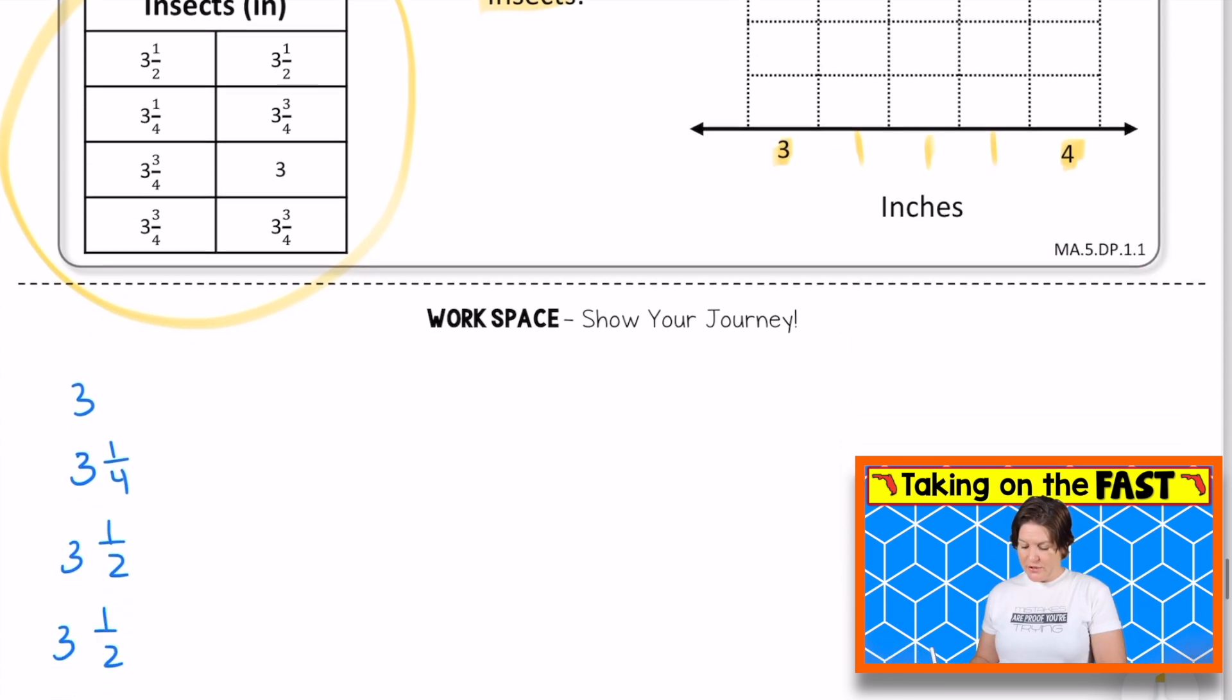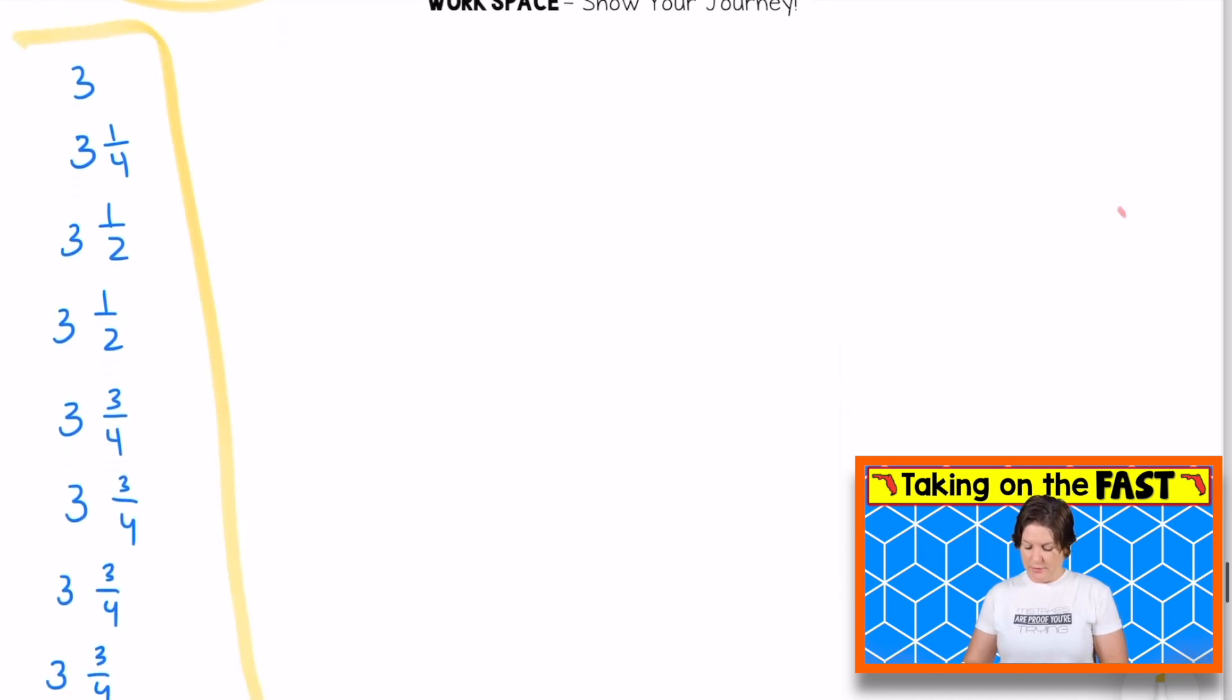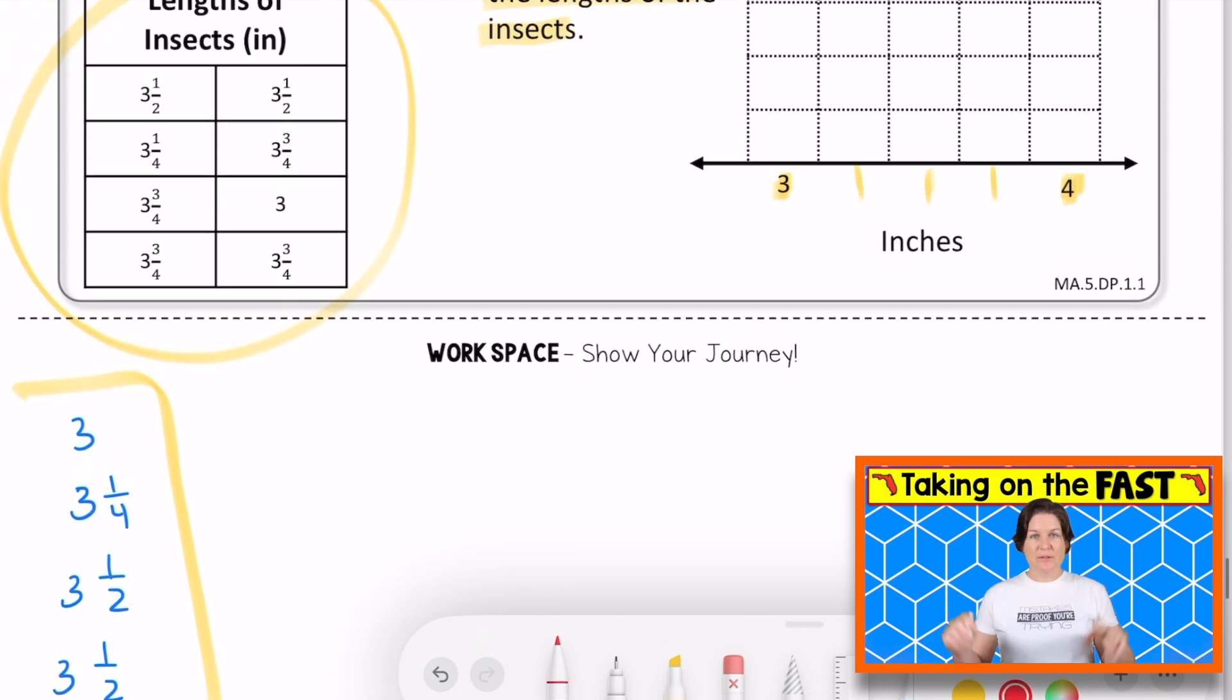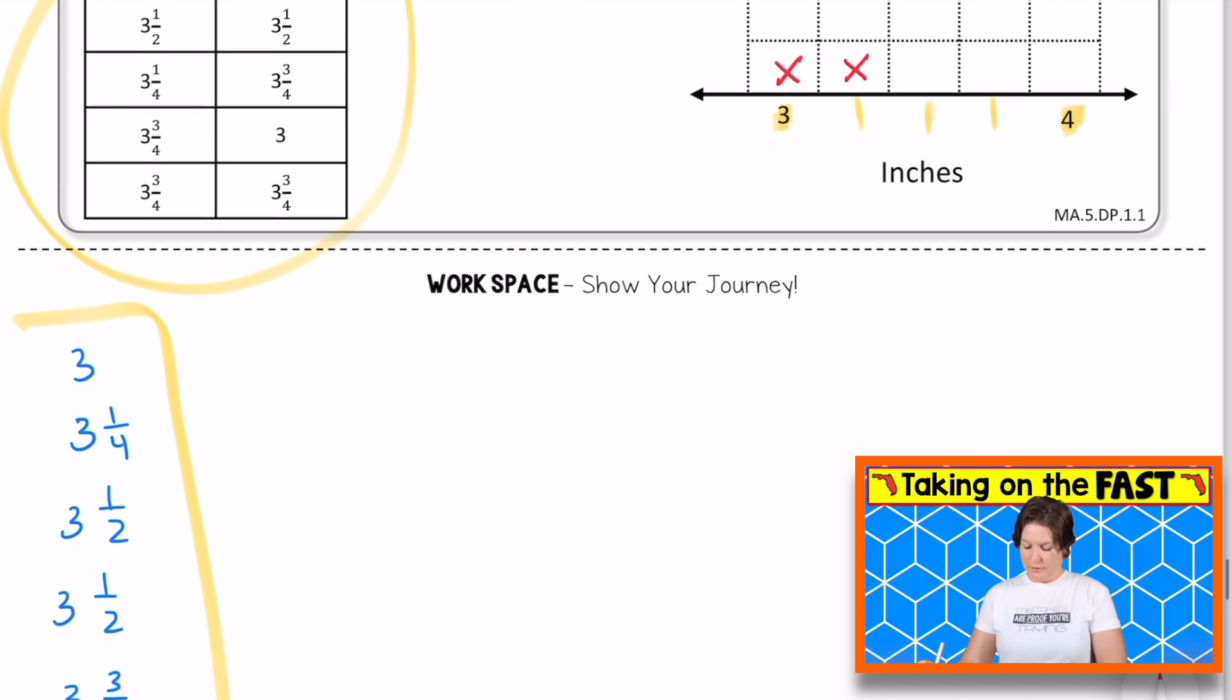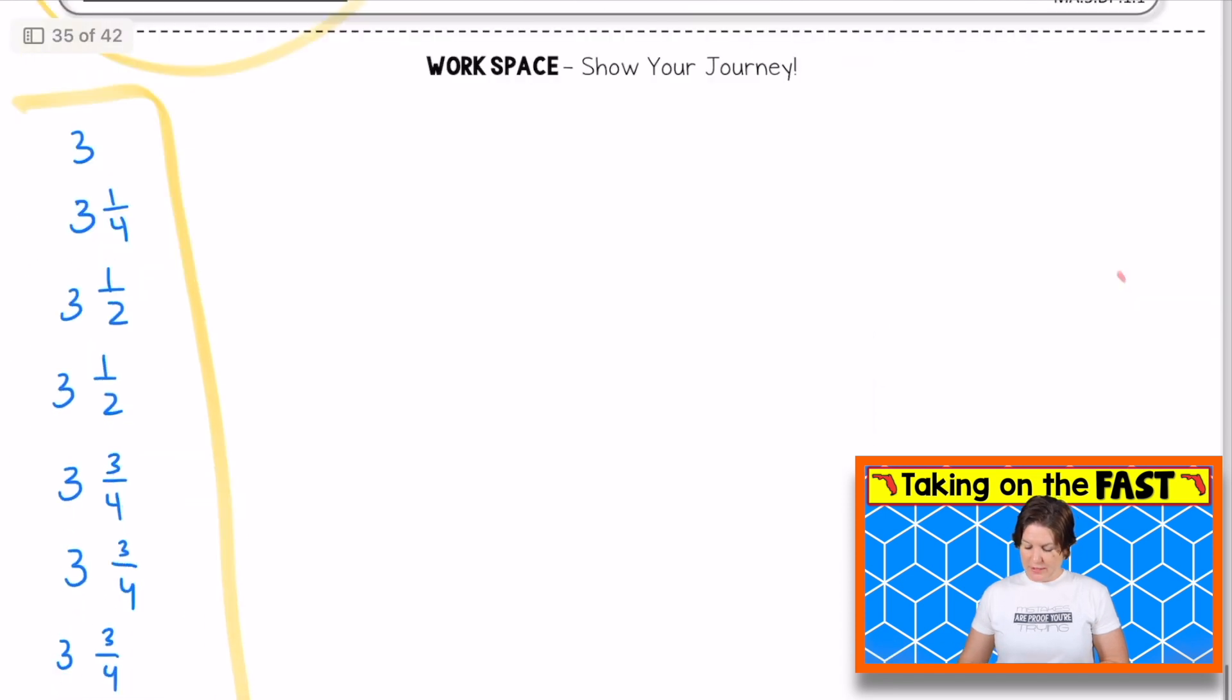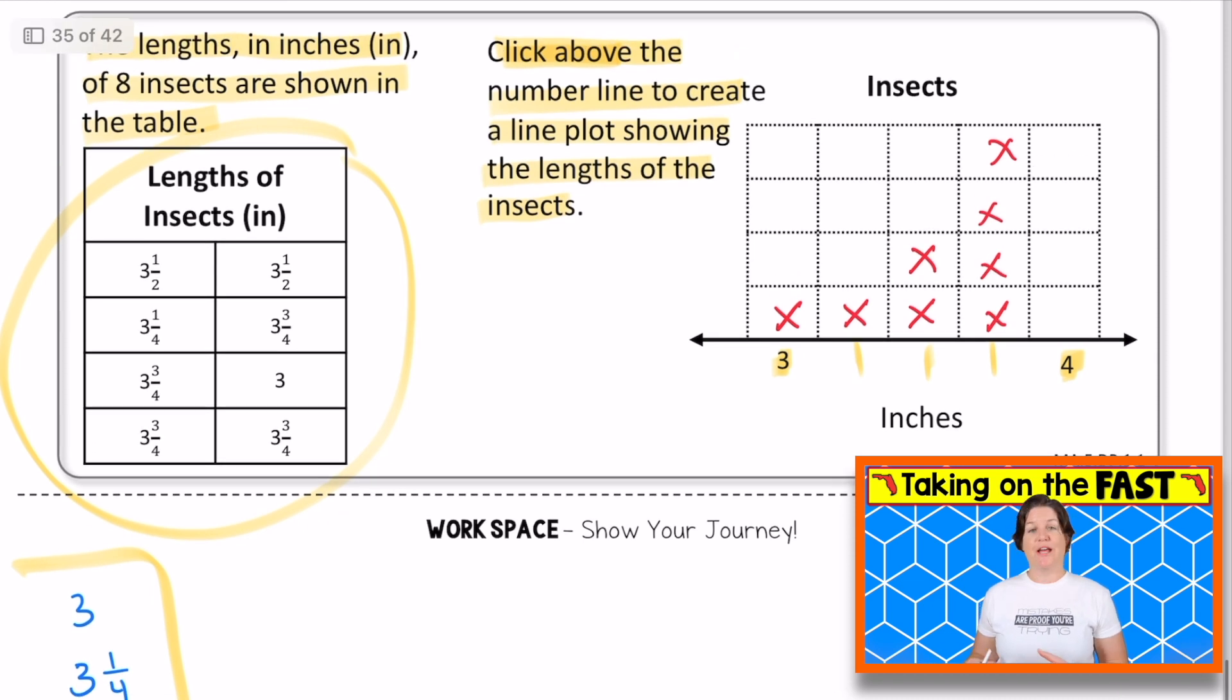So what I did was I took the data off the table and I wrote it in order just like here. And what I'm going to do is mark or click on the number line here to show a line plot. So we've got 3, put an X in 3, 3 and 1/4. We have two 3 and a halves. So two over 3 and a half, 3 and 3/4. We have four pieces of data there. So one, two, three, four. So that is what your line plot should have looked like.